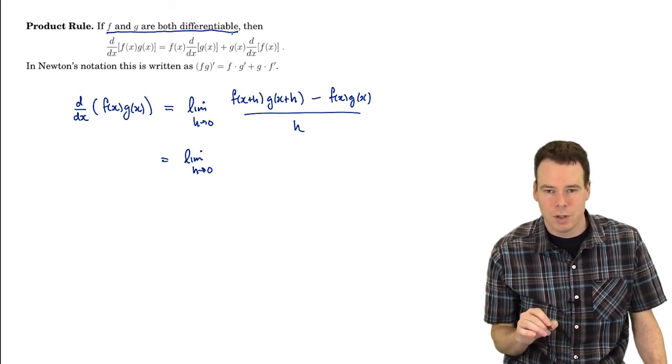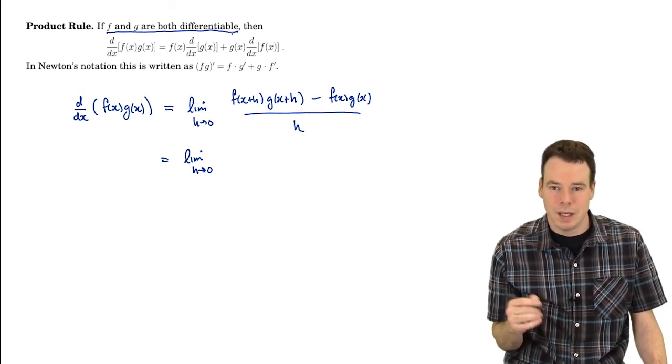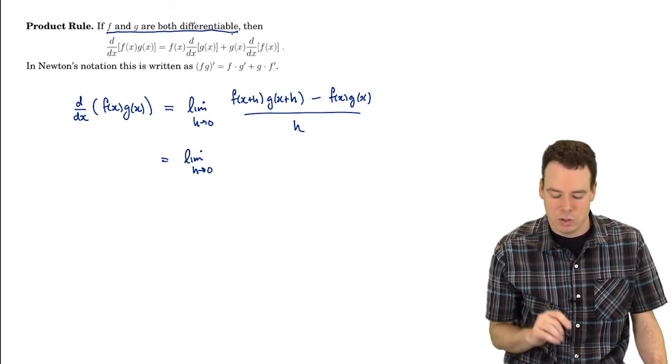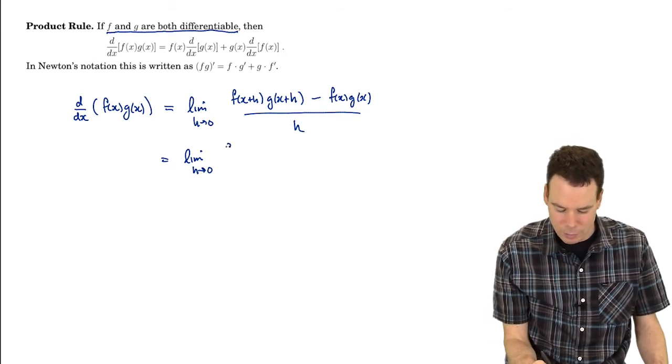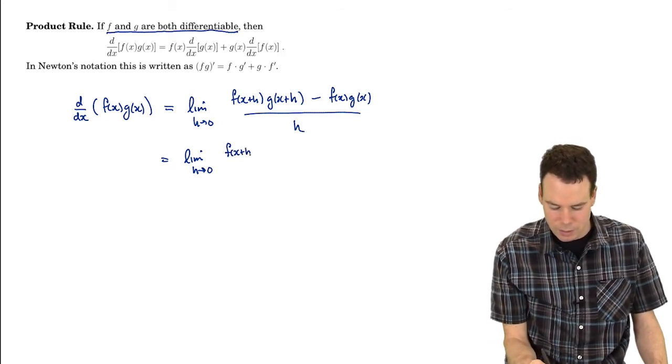What it means for them to be differentiable is that the limit defining their derivatives actually exists. So I'm going to try to get those limits to show themselves in here. And how am I going to do that? That's where adding zero in a fancy way comes in handy.